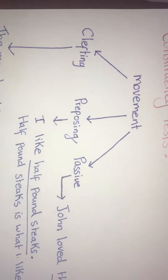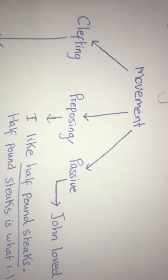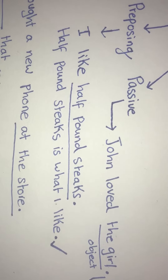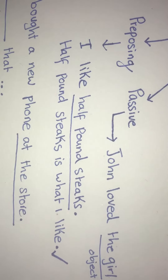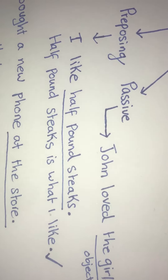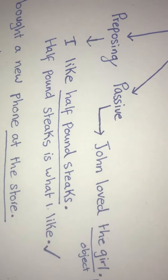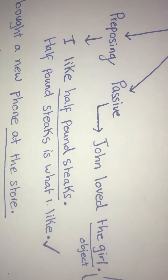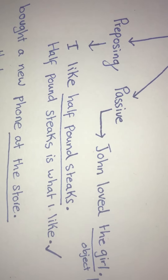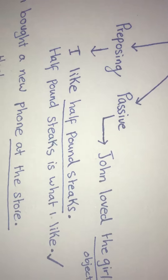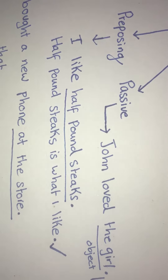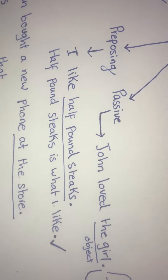The second test is preposing. Preposing is taking a part of the sentence and moving it to the beginning of the sentence. We have the sentence, 'I like half pound steaks.' If we move 'half pound steaks' to the beginning: 'half pound steaks is what I like' — it sounds great, so it's a constituent.